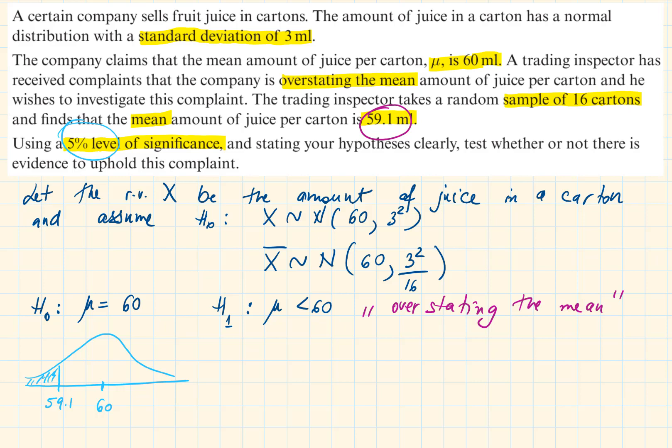This 5% significance level is telling us that if there is 5% or less chance of getting a mean of 59.1 from the whole population with a mean of 60, then this is quite unlikely to happen purely by chance. So, let's test this.